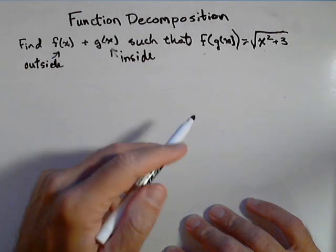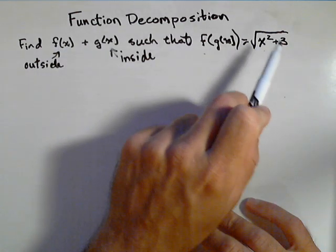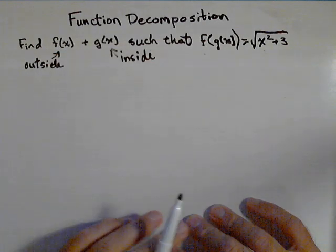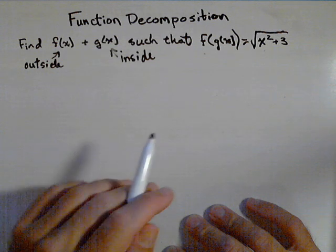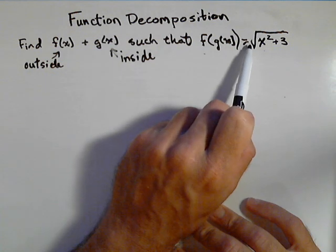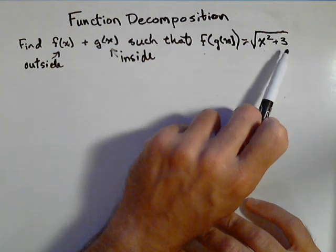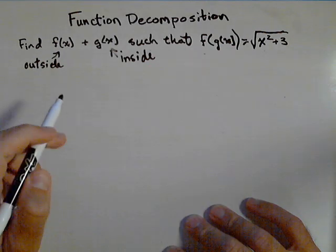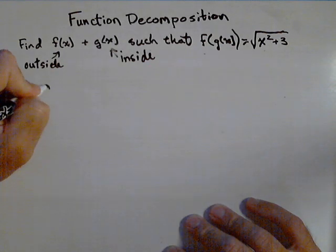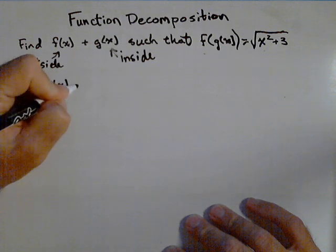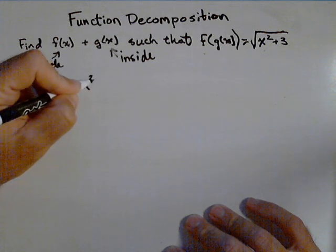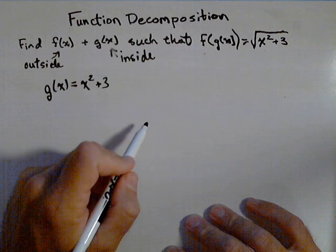Now, we can always make it very easy by picking one of them to be x and the other to be this function. So let's exclude the basic case. But if we look at this, we can look at the inside function as being x squared plus three. So, if we let g of x equal x squared plus three,